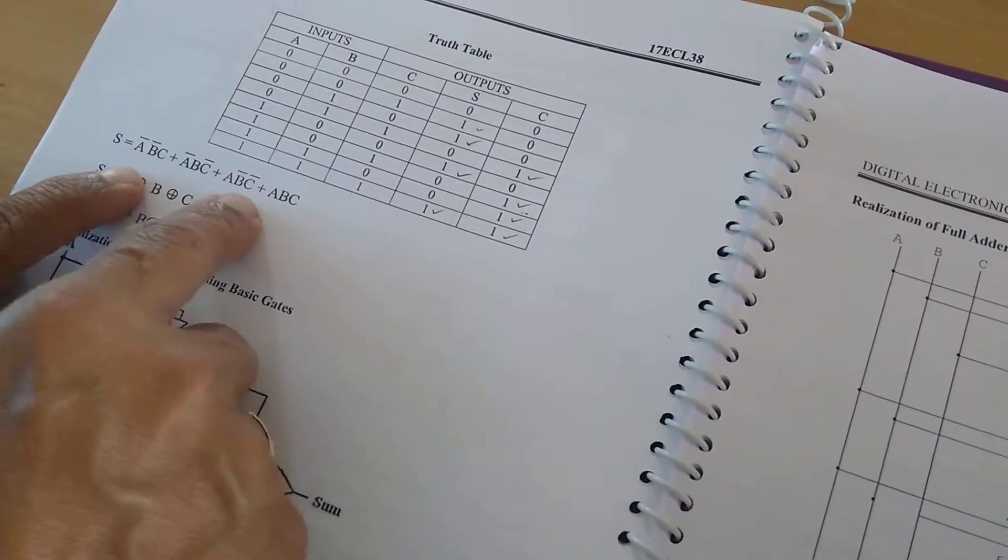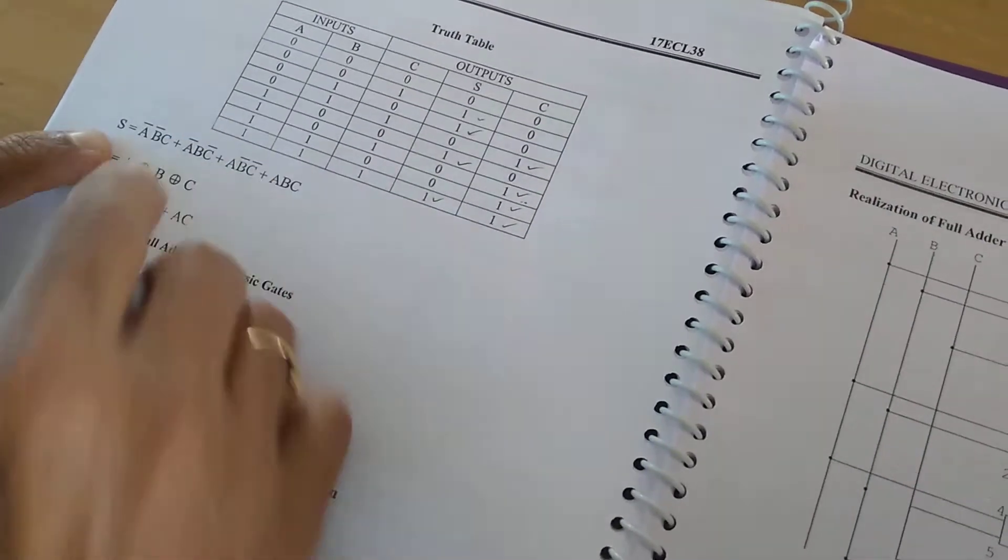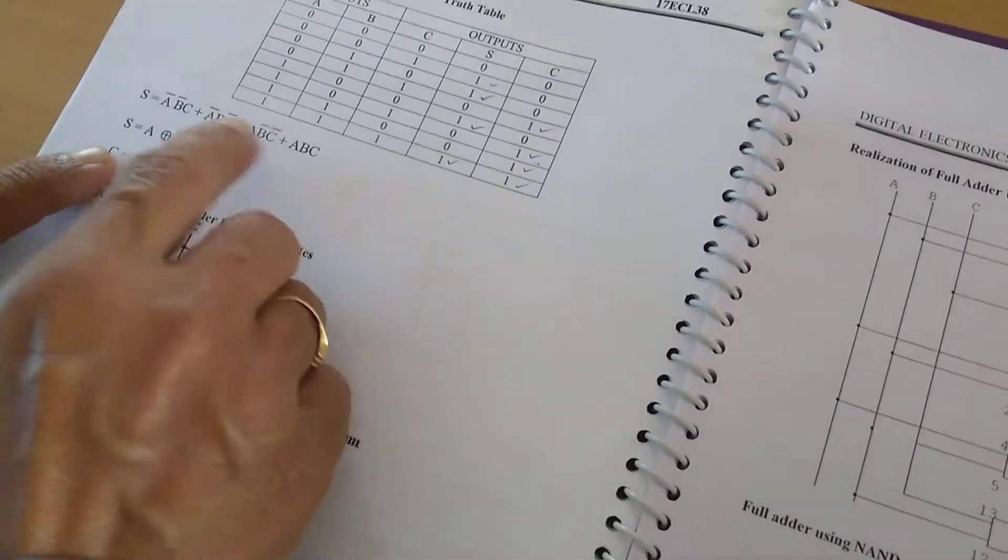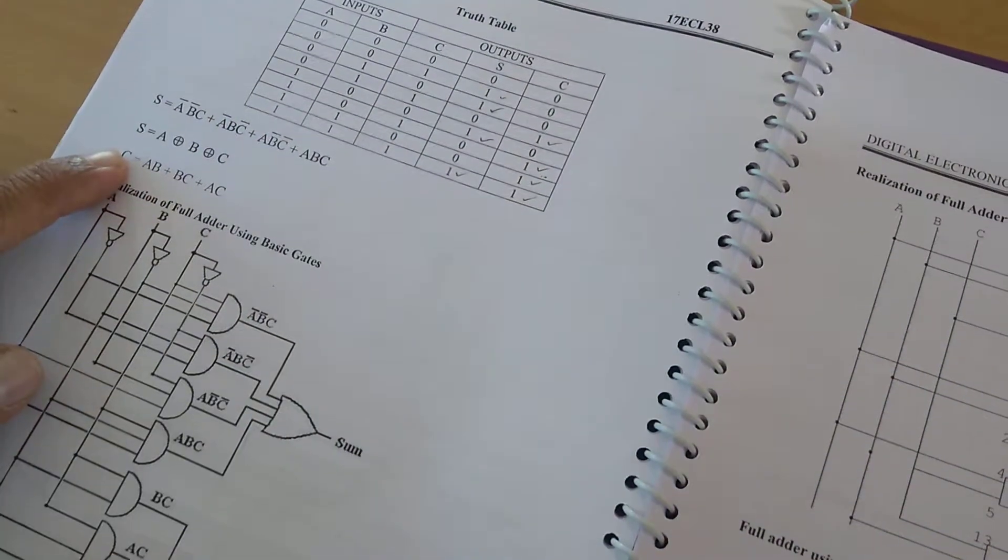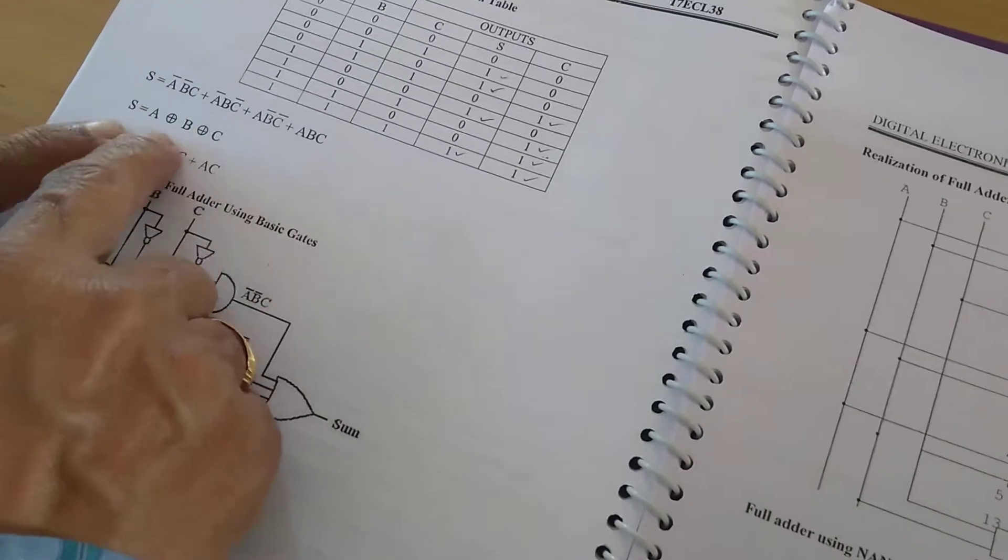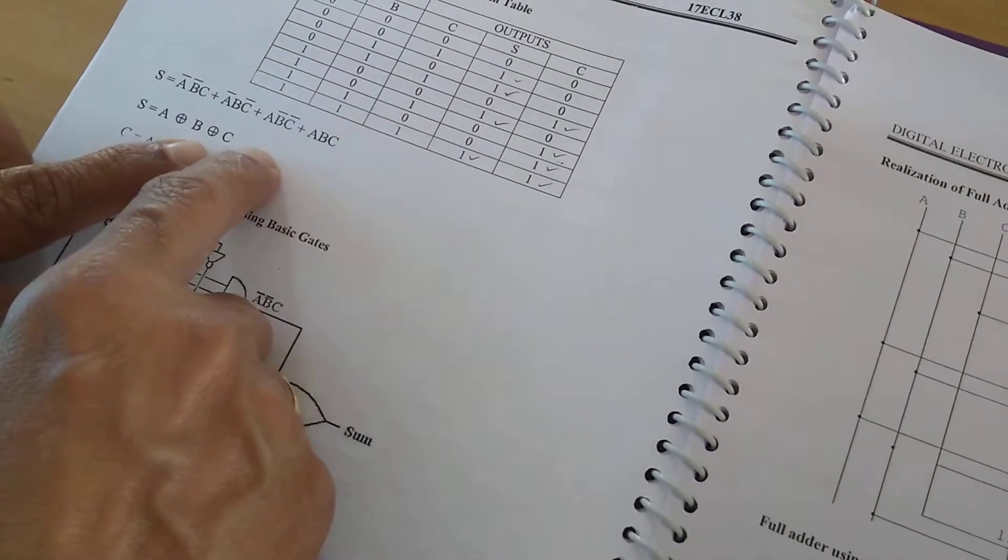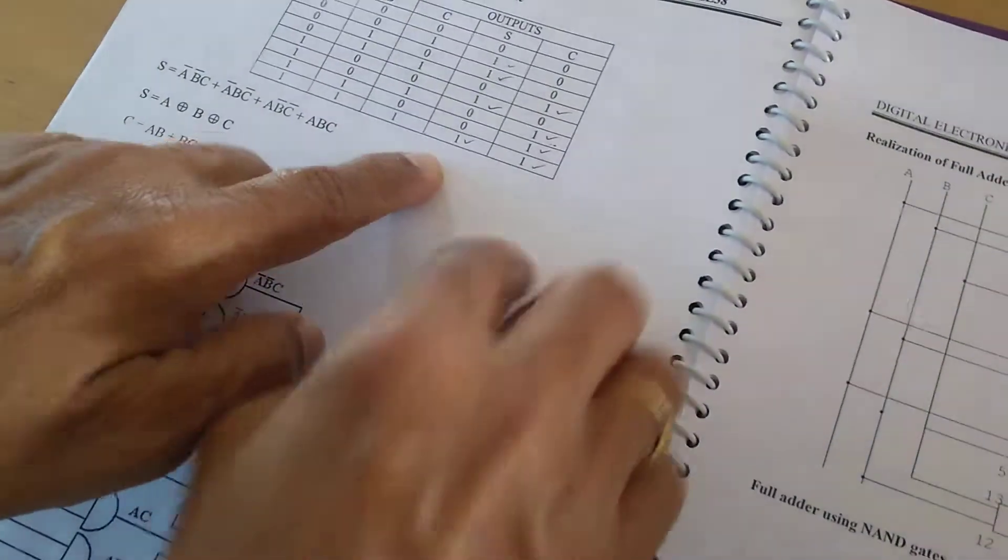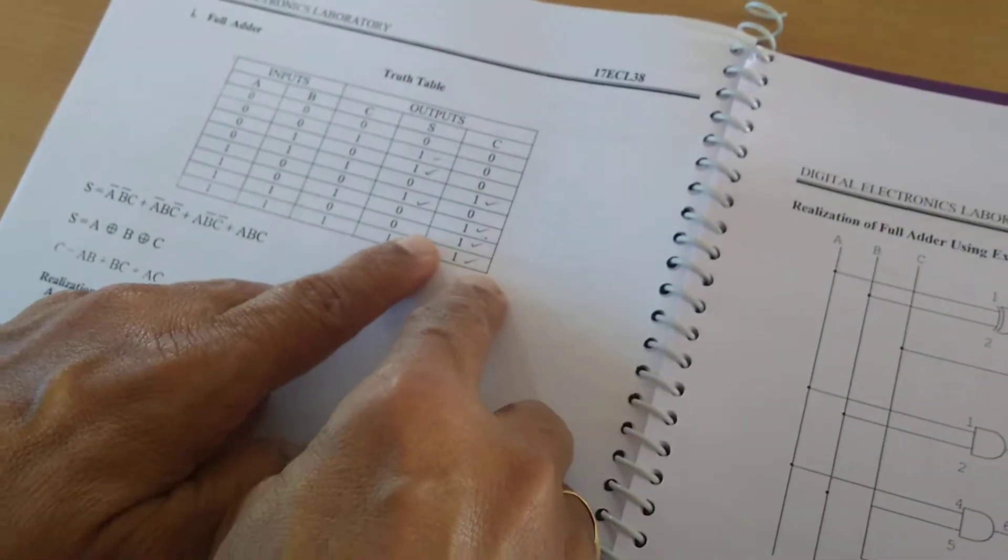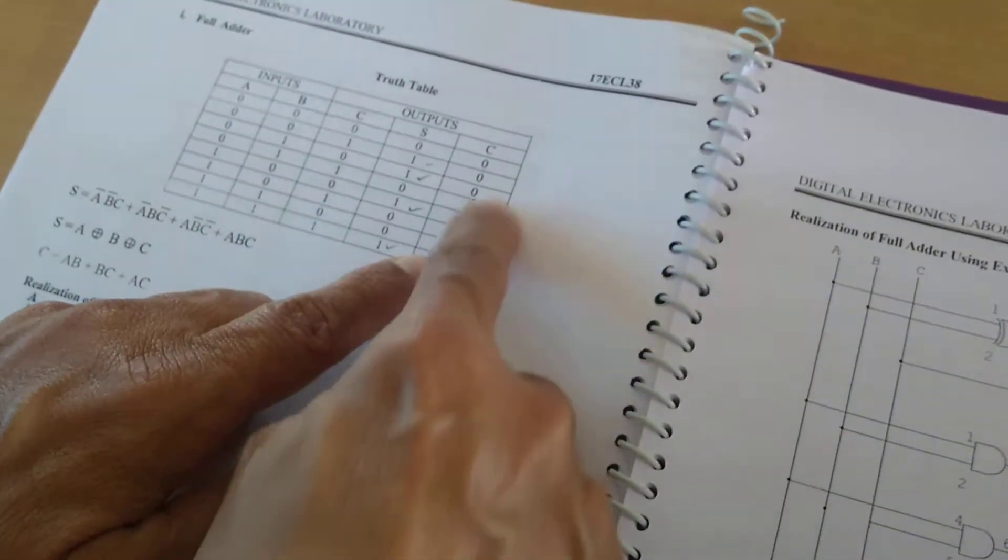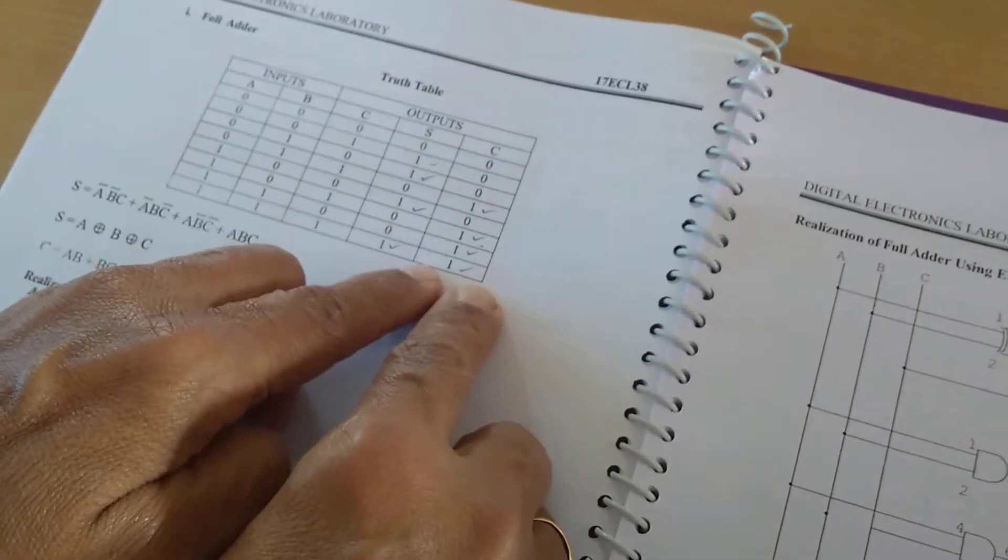The terms are written and then we get sum. If we simplify this, we will get sum equals A XOR B and then B XOR C. Similarly for the carry, we will get four terms.